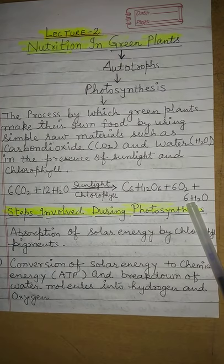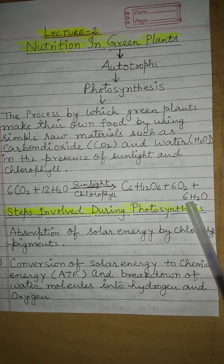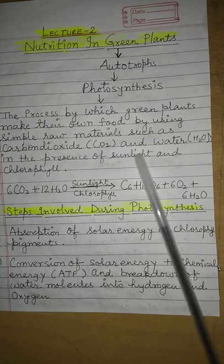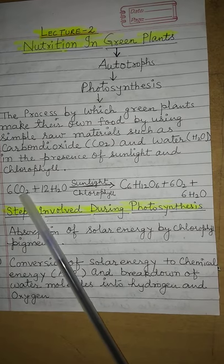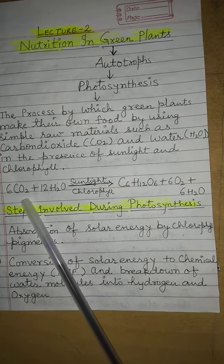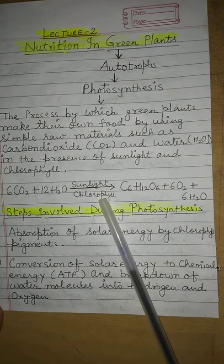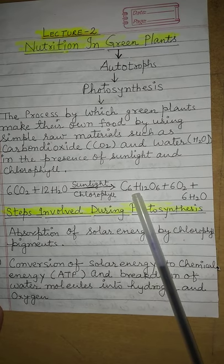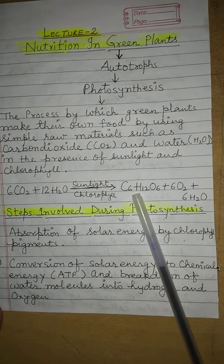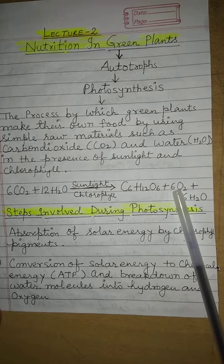Six extra molecules of water are also released during photosynthesis. During the process of photosynthesis, carbon dioxide and water — these two chemical substances combine together. This combination occurs in the presence of sunlight and chlorophyll. Plants form food in the form of glucose, and oxygen gas is also released — which is a very important gas for us.